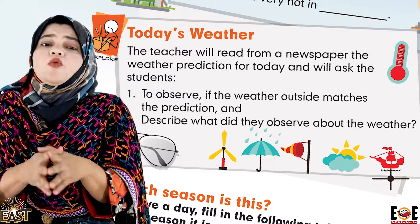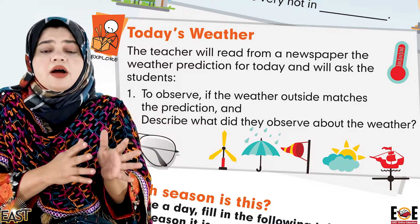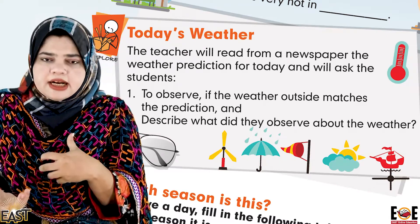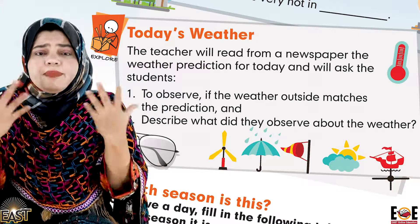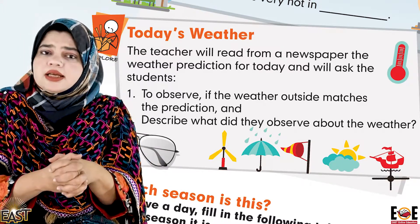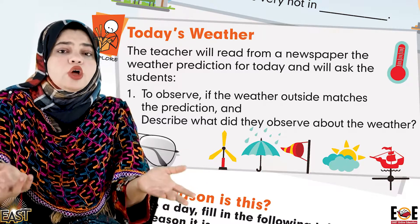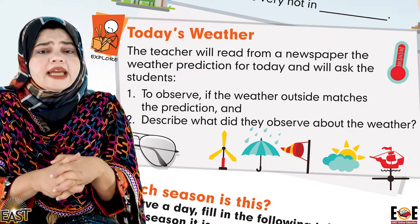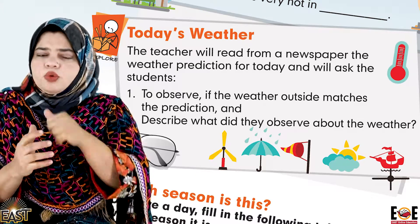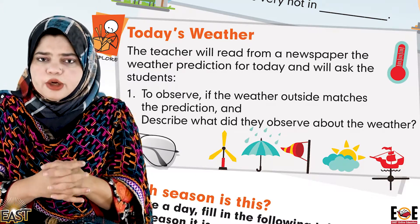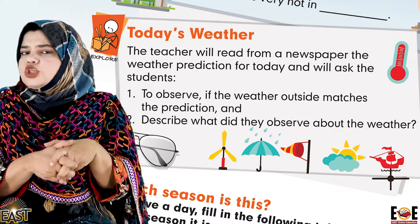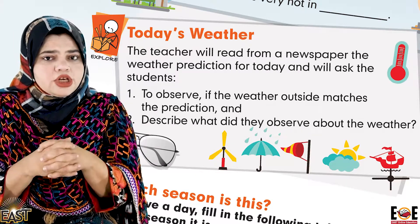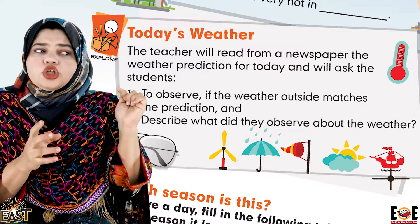Yeh prediction jo hoti hai hamare newspapers mein aati rehti hai. Newspaper ke alawa hum usko Google pe bhi dekh sakte hain, hum search kar sakte hain. Kyunki agar hame kuch apni picnics plan karni hain, koi trip plan karna hai, koi party arrange karni hai, toh hum yeh jaan sakte hain ke agale dinon mein jo hai mausam kaisa hoga — uske liye hamare paas prediction hoti hai, forecast hoti hai. Aapne kya karna hai: aap Google search karein aaj ki weather prediction, aur phir match karein ke aaj jo aap din guzar rahe hain usme woh prediction kitni match karri, kitni similarity hai dono ke andar.